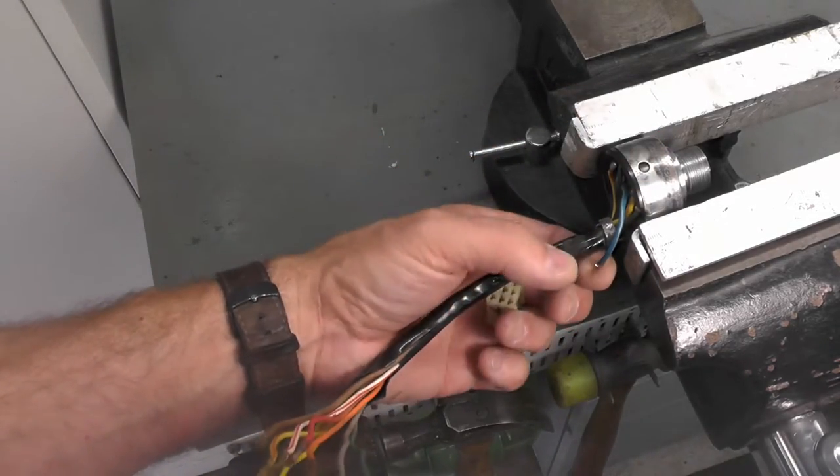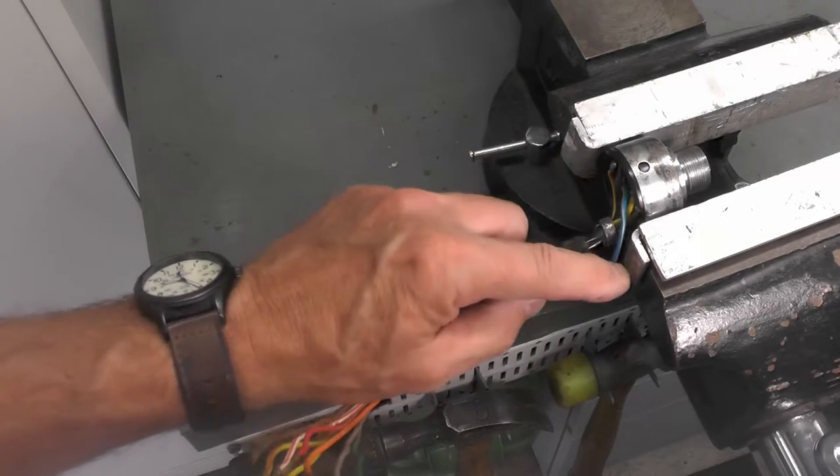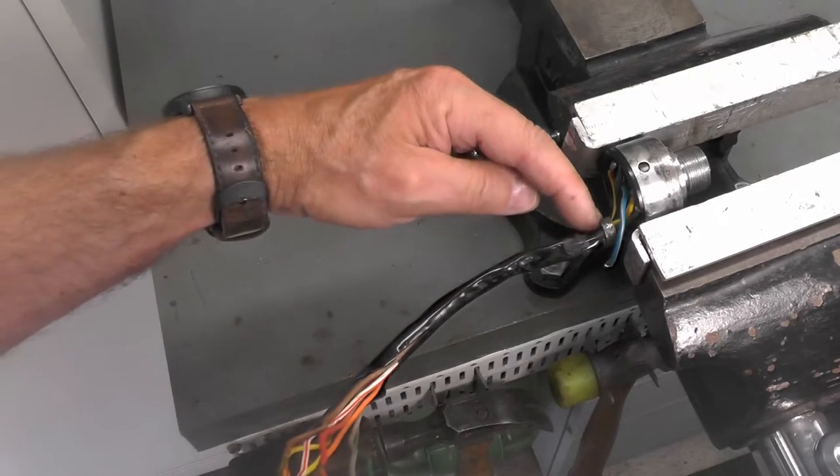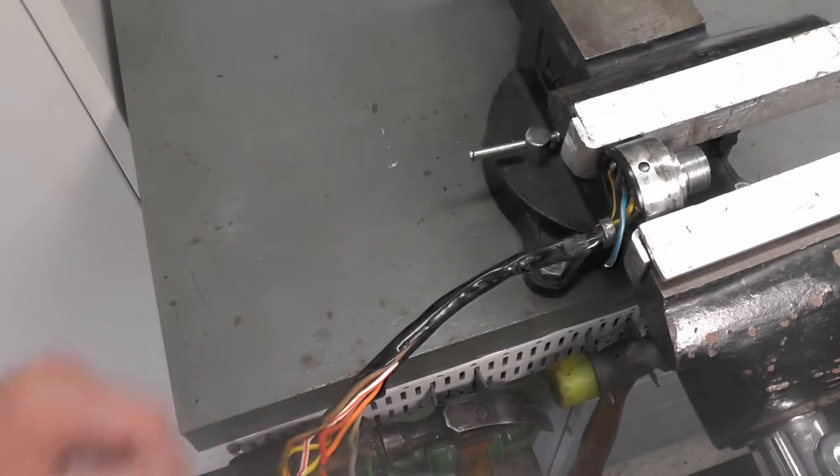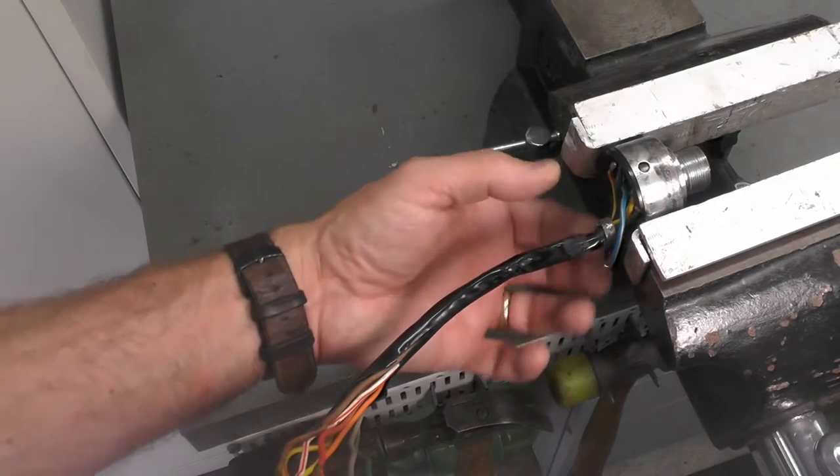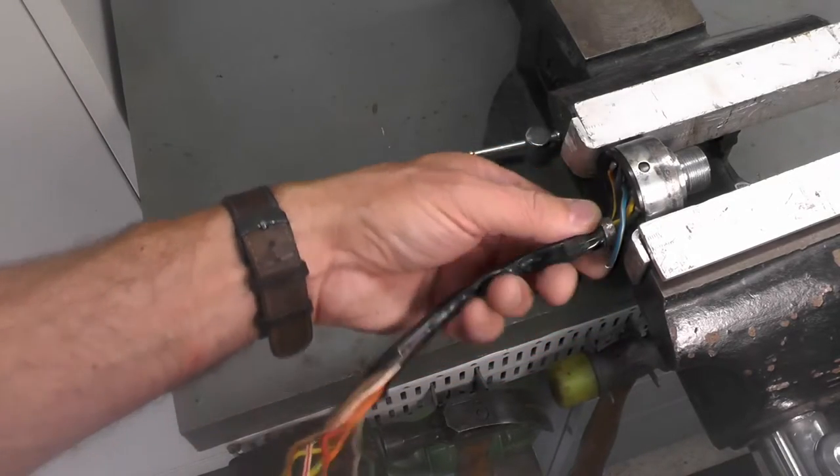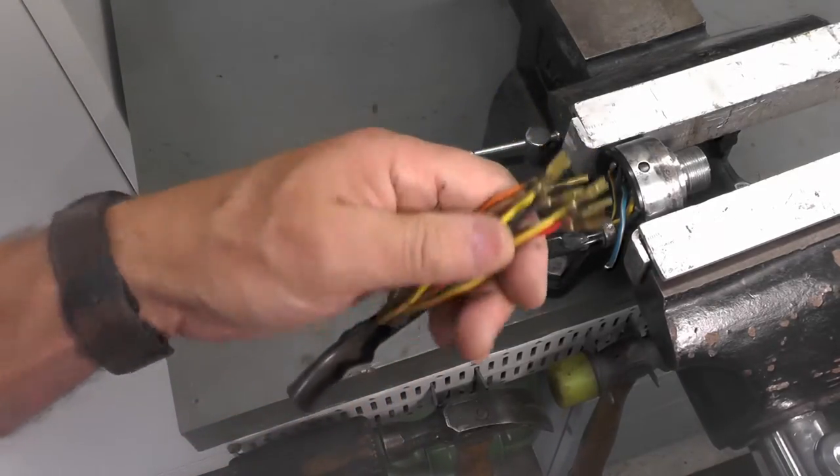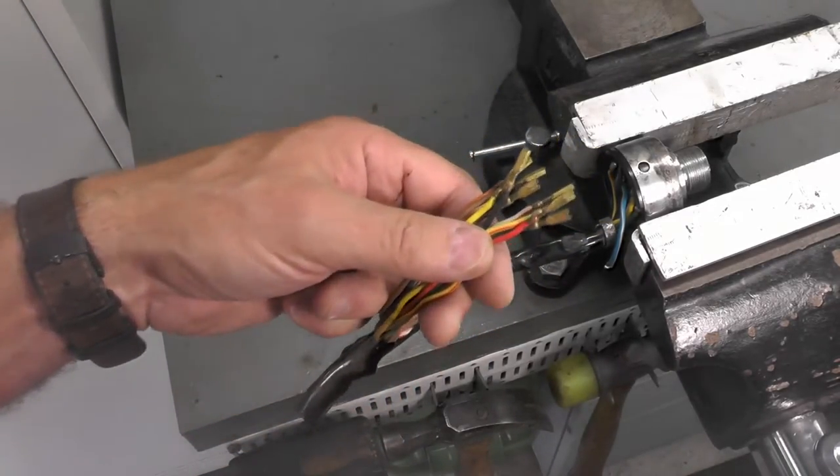I already have desoldered this little ground strap here. I used a little desoldering braid. That was very easy to do. The clamp right here I'm pointing to, which is part of that grounding strap arrangement, I just opened it up so you can see that this is loose. I also have removed all the wires from the plug.